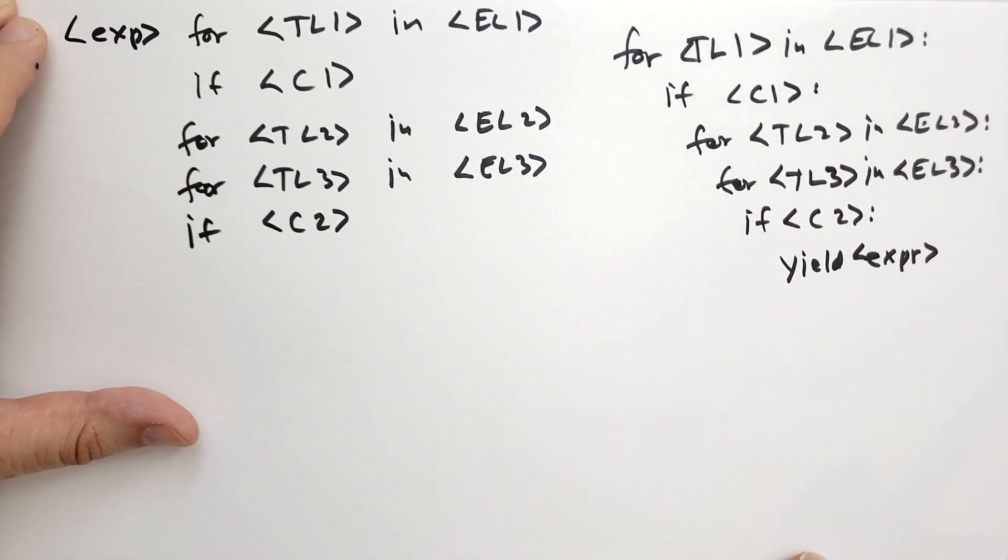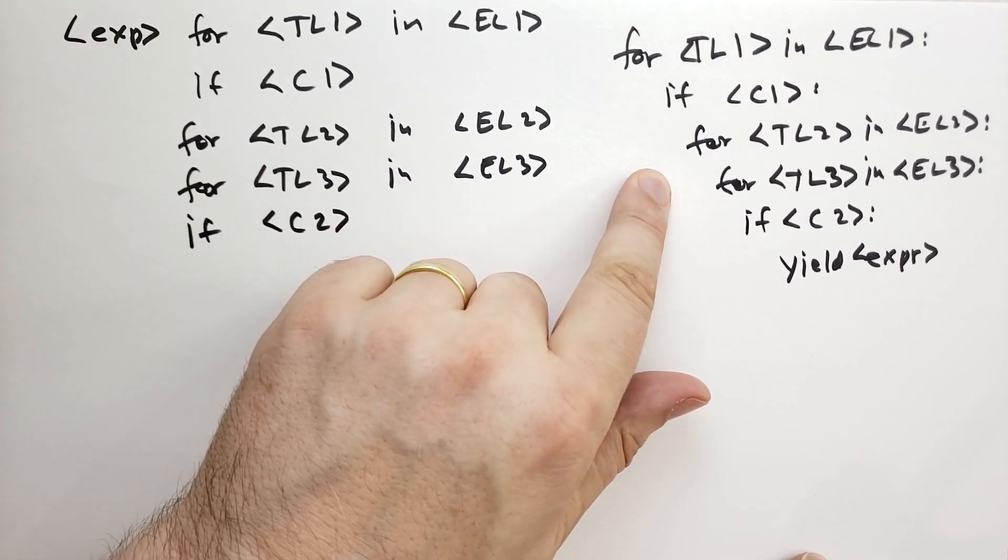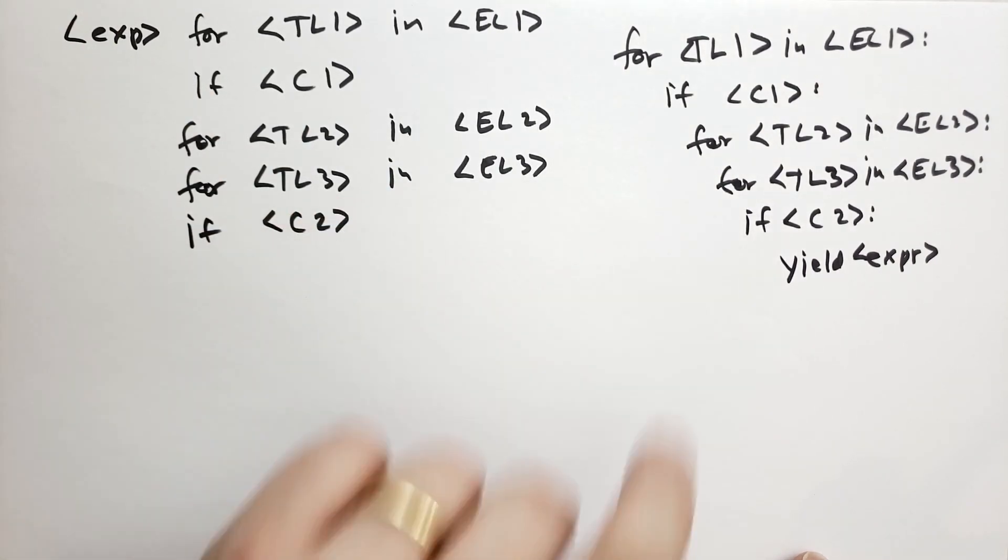Of course the comprehension this complicated is typically better written as an actual for loop or better yet a for loop that iterates over functions.